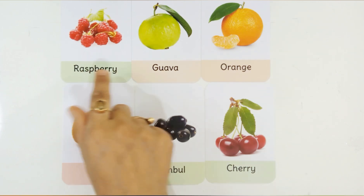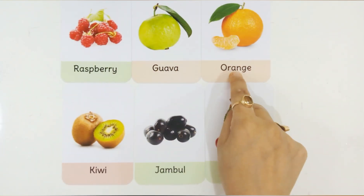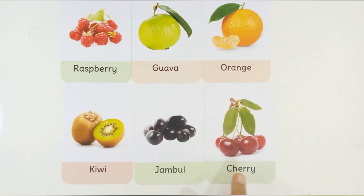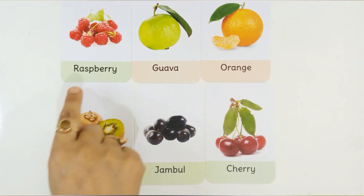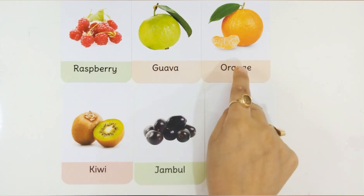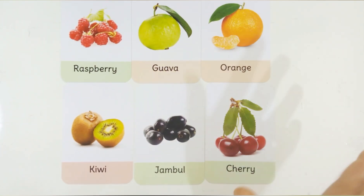R for Raspberry. G for Guava. O for Orange. K for Kiwi. J for Jambul. C for Cherry. Here are some fruits named Raspberry, Guava, Orange, Kiwi, Jambul, and Cherry.